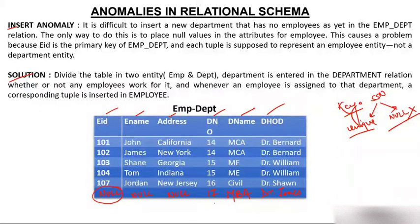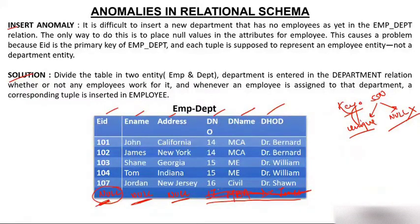So the problem while inserting information of a new department is that I'm forced to put null values in columns that do not accept null. Because employee ID is the primary key and primary key cannot be null, I cannot store information of the new department. The root cause is that this table is composed of more than one entity — employee and department — combined into one table.